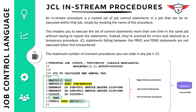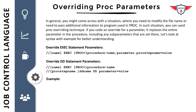Now let's move on to the proc overriding section. In this section we will focus on how to override the different parameters used in the proc. You might encounter situations where you need to modify a file name or override parameters used in a proc, and the best way to do that is by using a proc overriding technique. Let's look at the example and syntax so you can understand how to override the parameters.